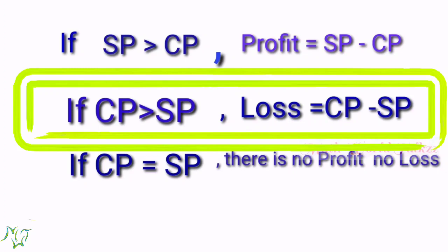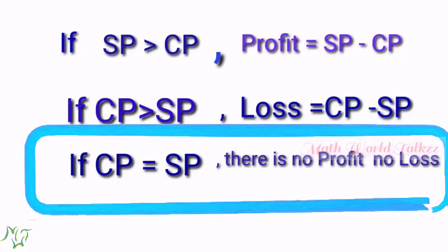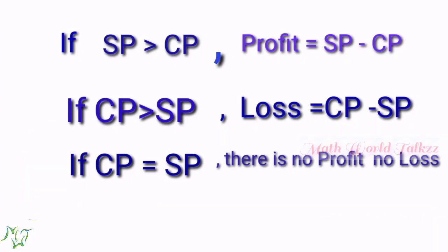Loss is equal to CP minus SP. The next case is when cost price is equal to selling price — that is, if the cost price and selling price are the same, there is no profit and no loss.